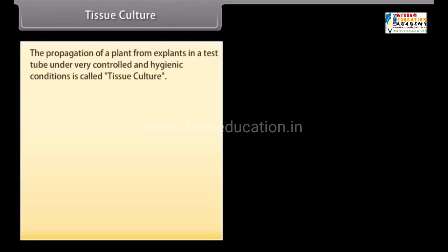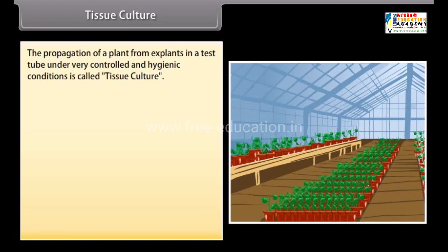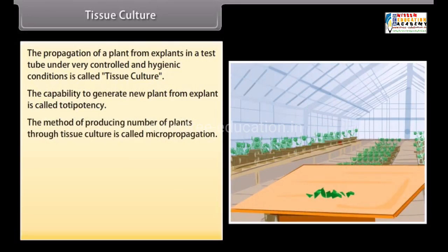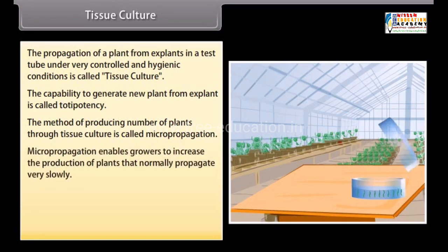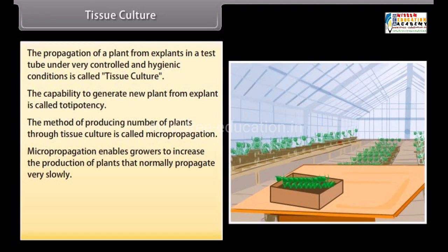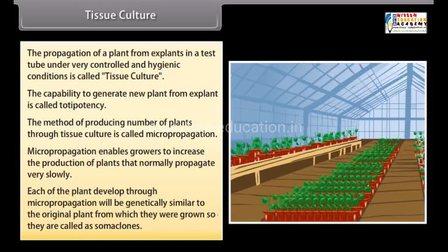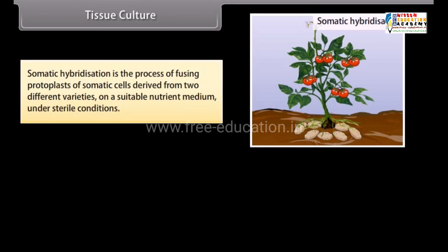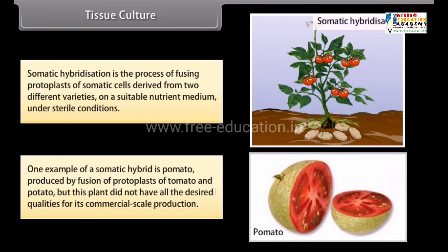Tissue culture: The propagation of a plant from explants in a test tube under very controlled and hygienic conditions is called tissue culture. The capability to generate a new plant from an explant is called totipotency. Producing plants through tissue culture is called micropropagation, which enables growers to increase production of plants that normally propagate very slowly. Plants developed through micropropagation are genetically identical to the original and are called somaclones. Somatic hybridization fuses protoplasts of somatic cells from two different varieties — for example, pomato, produced by fusion of tomato and potato protoplasts.